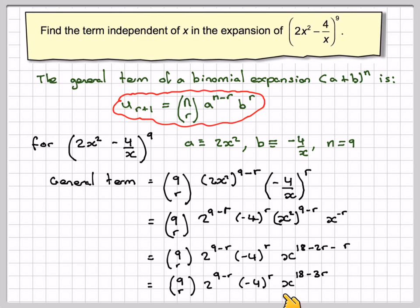And for a term to be independent of x, we need this to be x to the 0, because x to the 0 gives me 1, therefore we have a term independent of x, a constant term, is another terminology used.